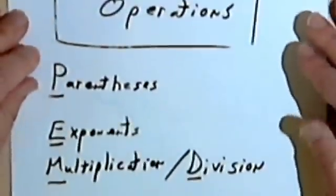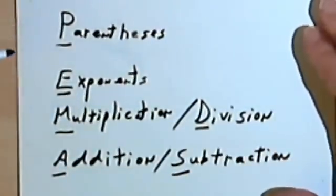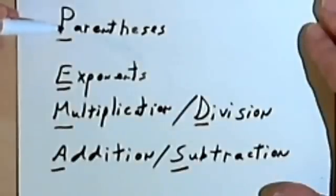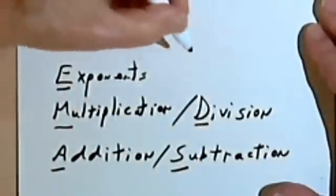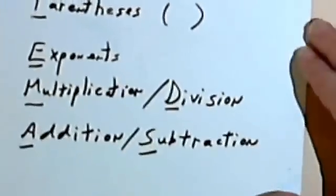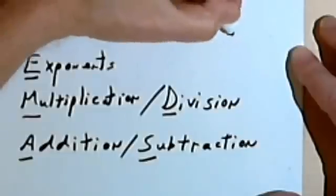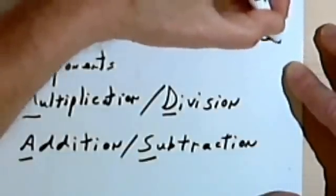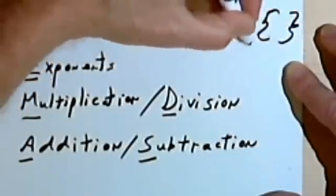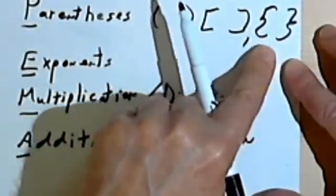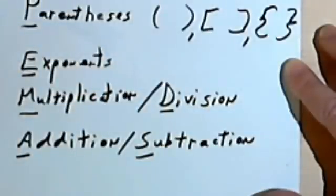The rules for order of operations tell us that if we have anything inside parentheses, we have to deal with those first. So anything that we see enclosed in parentheses, or square brackets, or curly braces — we would do whatever's inside of these first, and then we would go on to some of the other parts.